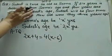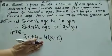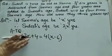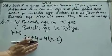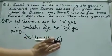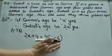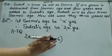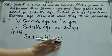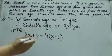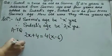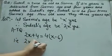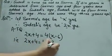So according to the given information, our mathematical equation is: 2X plus 4 — we added 4 years to Sudesh's age and subtracted 6 years from Sima's age — so Sudesh's age becomes 4 times Sima's age. Let's find the value of X. We get: 2X plus 4 equal to 4X minus 24.